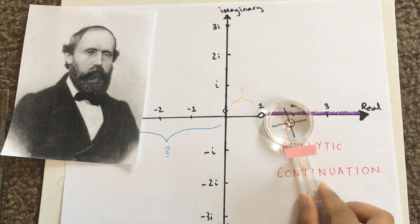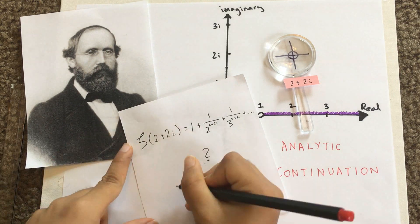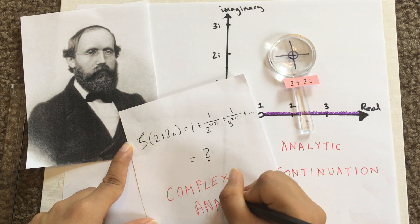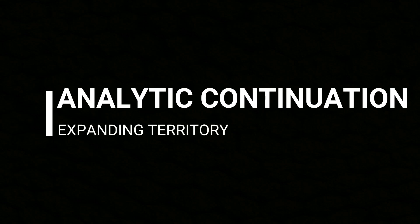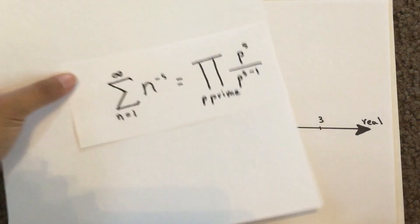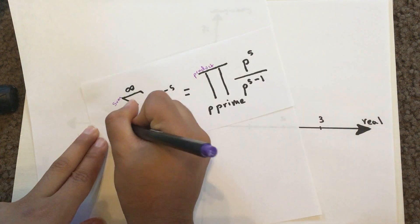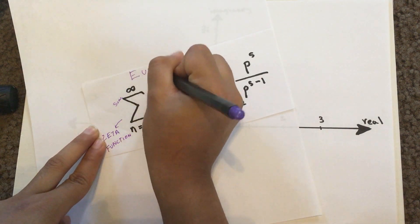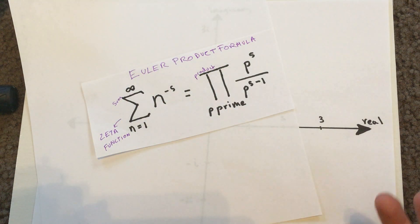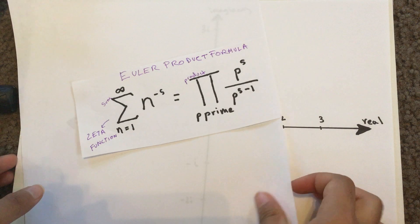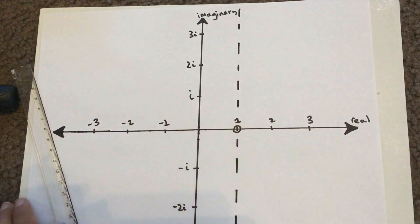What Riemann essentially did was turn our domain line into a domain plane of complex numbers, so now we can plug in any point in the plane into the zeta function and check for values. This is complex analysis — finding values for complex numbers. Here is how analytic continuation, or domain stretching, happens. This equation is the Euler product formula. On the left, it is just another way to write the zeta function concisely. On the right, like the sigma symbol meaning infinite sum, the pi symbol means an infinite product. This equation is defined for all complex numbers with the real part greater than 1.